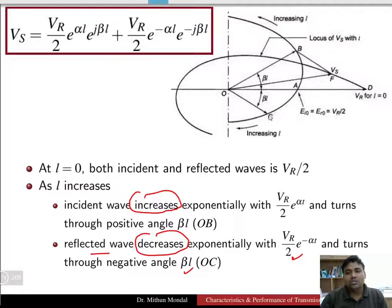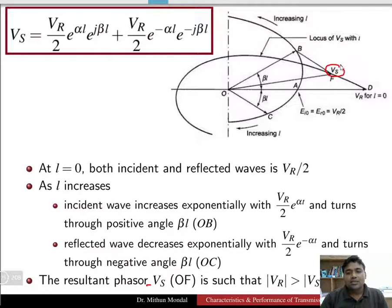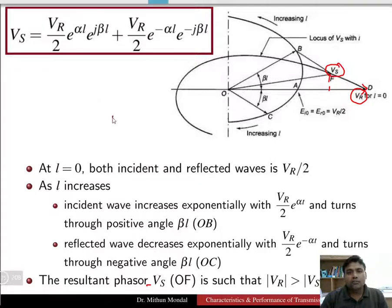The resultant phasor VS — that is OF, the sending end voltage — is much greater than the receiving end voltage phasor. So from the locus of the waveform it can be seen that the value of VR is much greater than VS when the line is a long transmission line.